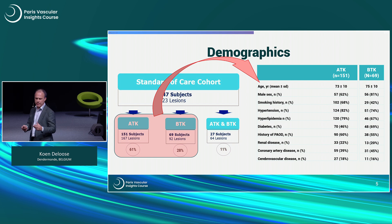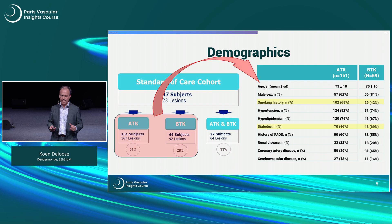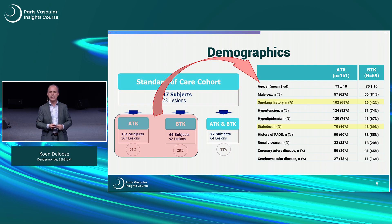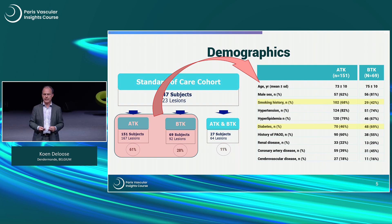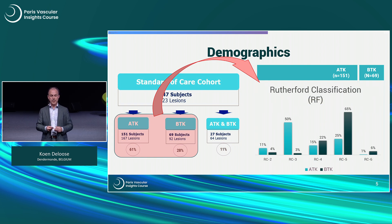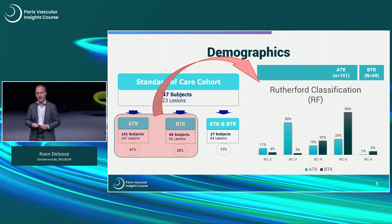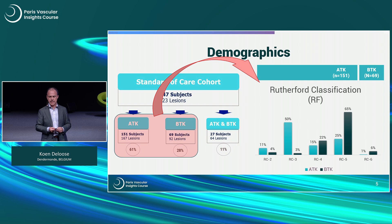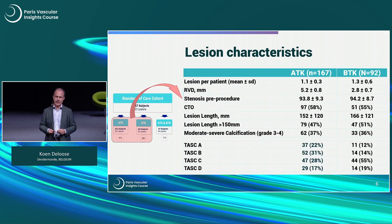Here you see some demographics — nothing special. Quite clear is that there are more smokers in the above-the-knee group than in the below-the-knee group, and more diabetes vice versa. Looking at Rutherford classification, in light blue you see above-the-knee patients with more claudicants at Rutherford 3, some Rutherford 4 and 5, while below-the-knee patients were predominantly Rutherford 4 and 5, with some Rutherford 6.